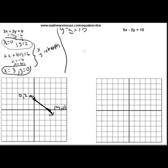So 5x - 2y = 10. We need two points. Set x = 0. You get 5 times 0 - 2y = 10, or -2y = 10. Divide both sides by -2 to get that y = -5. There's our first point.